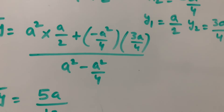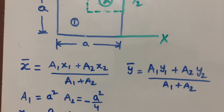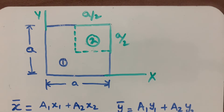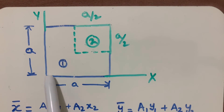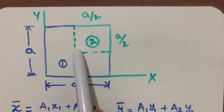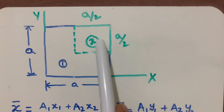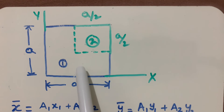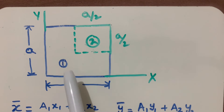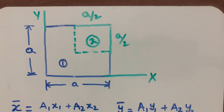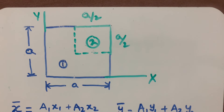So we have found the centroid for this square plate with the small square removed. The final answer is x̄ = 5a/12 and ȳ = 5a/12. I hope you understood this. Thank you so much, thanks for watching.